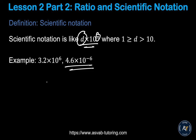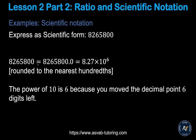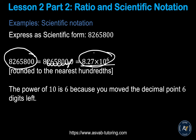Let's learn how to convert a standard number to scientific notation. Take the number 8,265,800. Place a decimal after the first digit, giving you 8.2658, then write times 10 to a power. Count the number of digits after the new decimal point — you have one, two, three, four, five, six — so you write 10 to the power of 6.